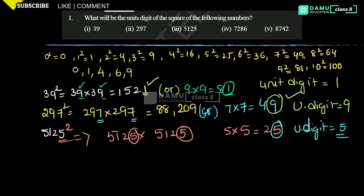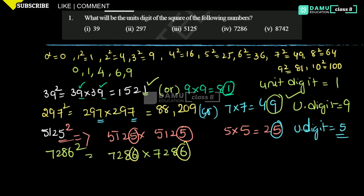Next one is 7286 whole square. 7286 into 7286 — 6 is the unit digit. So 6 into 6 = 36. From that, 6 is coming. Unit digit will be equal to 6.